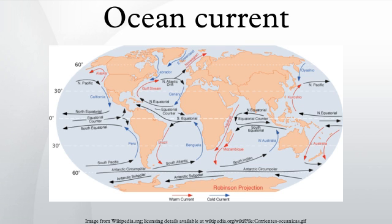Horizontal and vertical currents also exist below the pycnocline in the ocean's deeper waters. The movement of water due to differences in density as a function of water temperature and salinity is called thermohaline circulation. Ripple marks in sediments, scour lines, and the erosion of rocky outcrops on deep ocean floors are evidence that relatively strong, localized bottom currents exist. Some of these currents may move as rapidly as 60 cm per second.